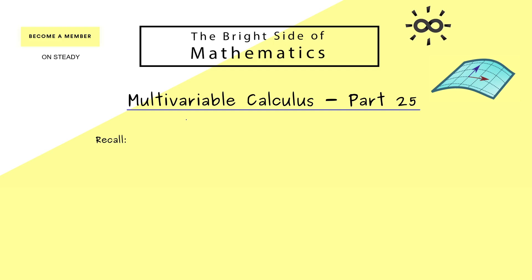Now, from the last video we already know that we can use local diffeomorphisms to rewrite implicit equations. For example, we have discussed if we can solve this equation for the variable z.